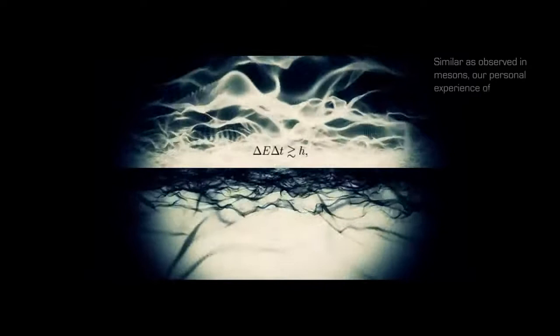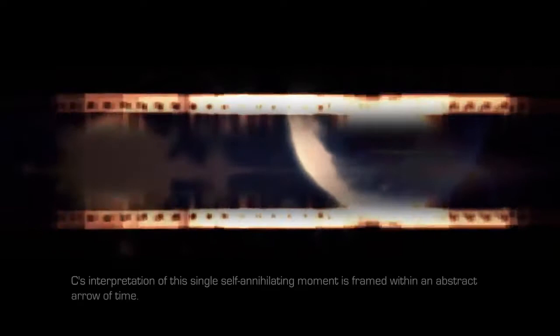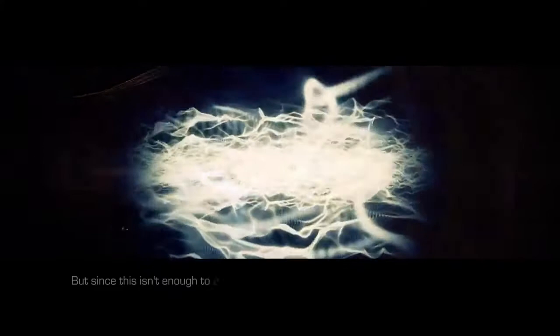The unperturbed time T in the uncertainty principle is the required time or cycle for quanta to exist. Similar as observed in mesons, our personal experience of time or interval of the current moment reaches its threshold when C is cancelled out by its anti-C. C's interpretation of this single self-annihilating moment is framed within an abstract arrow of time. If we then want to define interaction and look at the basic properties of the wave-particle duality of quanta, all interactions would consist of interference and resonance. But since this isn't enough to explain the fundamental forces, we are required to use different models.